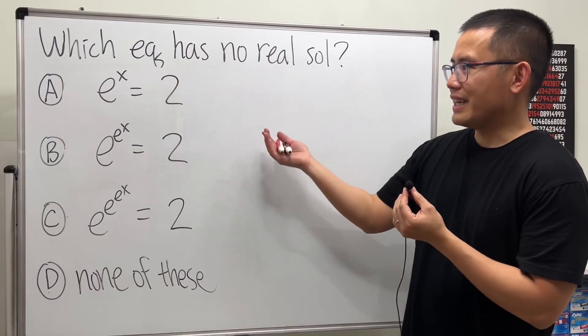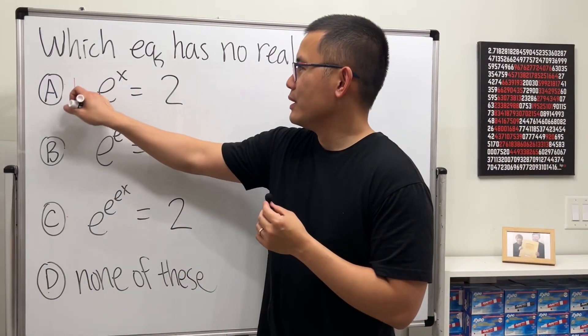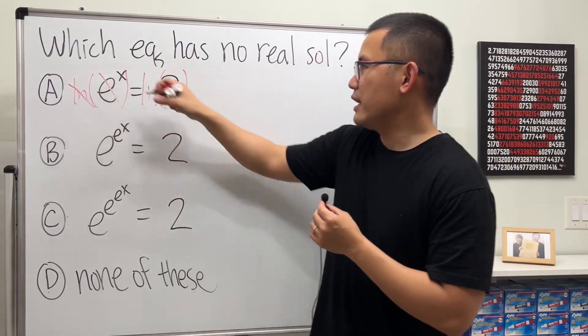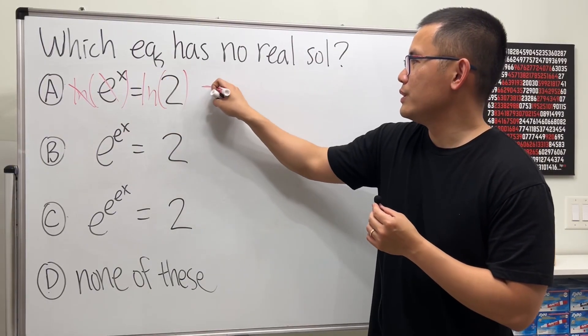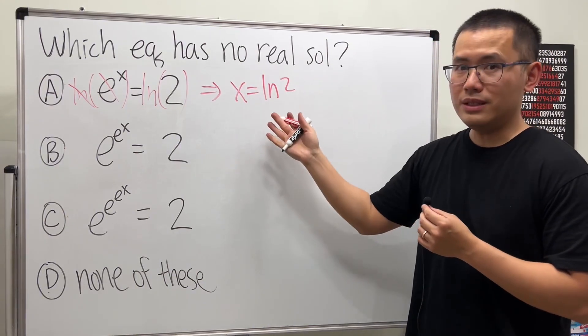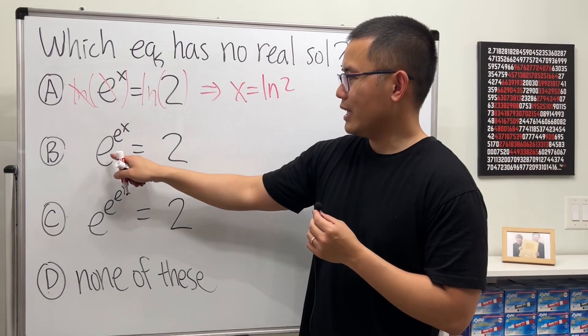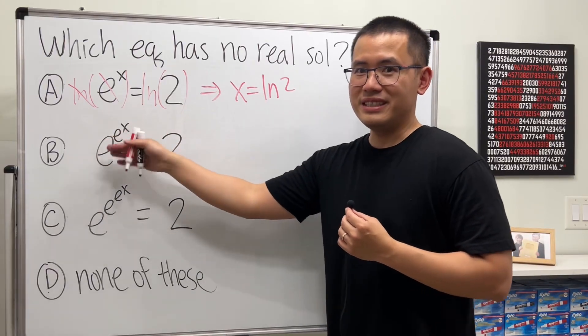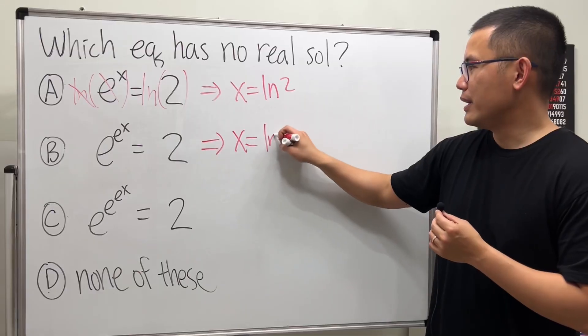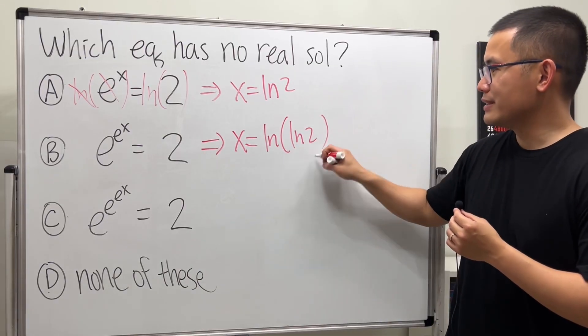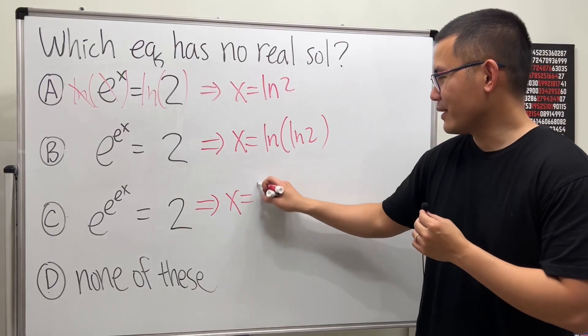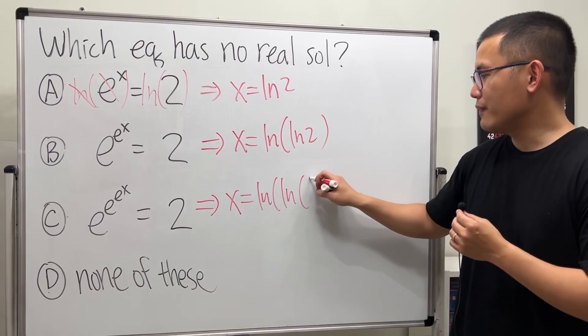So, it looks like we can do the following. To get rid of the e, we just take the natural log on both sides. Right? So, we get the exponent x, and we can just say x is equal to ln(2) for the first one. And for the second one, we have e^(e^x). Just take the natural log twice, and it looks like x is just equal to ln(ln(2)). Similarly, for the third one, just do it again, right? So, ln(ln(ln(2))).